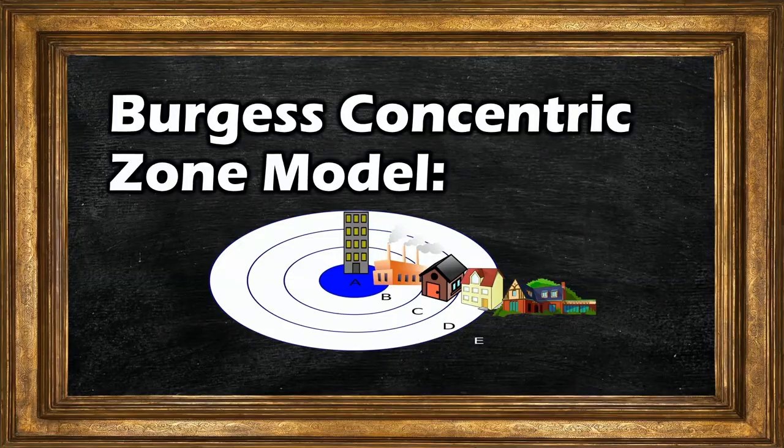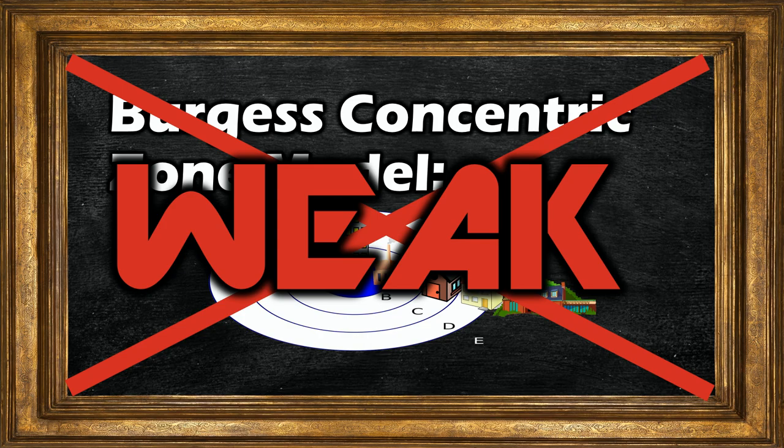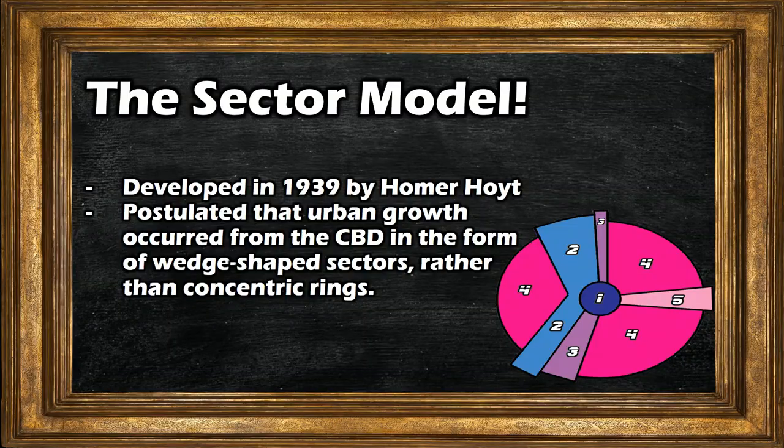Homer Hoyt was a geographer who looked at the Ernest Burgess model and thought that there was more work to be done, or something was missing. He believed that the ring-type zones shown in the Burgess model were too simplistic and failed to adequately capture the why of where related to how people truly use urban space. So he postulated that rather than concentric zones or rings, you could better explain how people situate themselves within a city by using sectors that stem from the CBD. His model was proposed in 1939, a little more than a few years after the Burgess model.